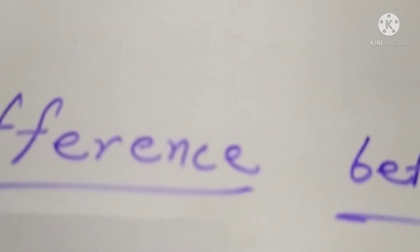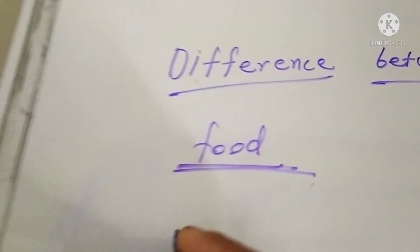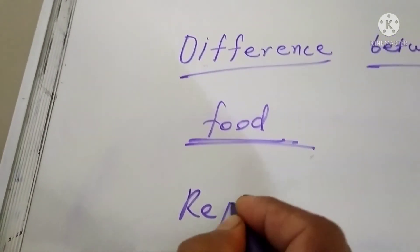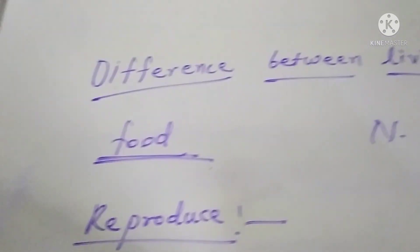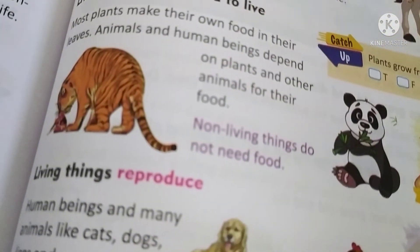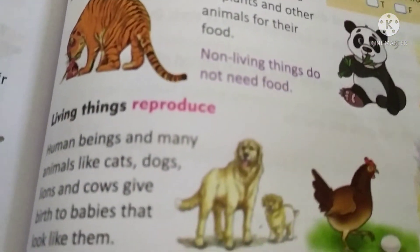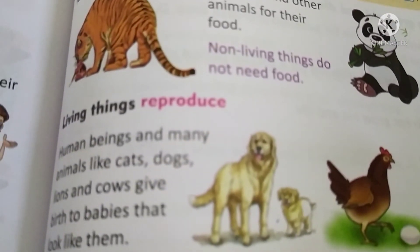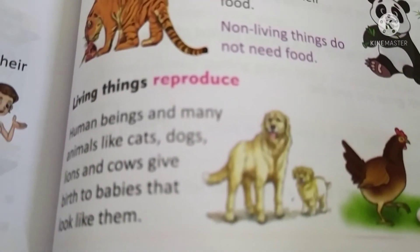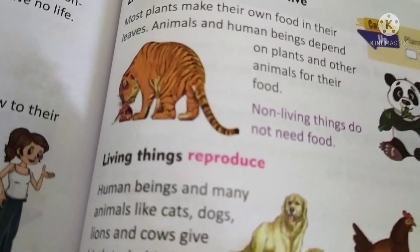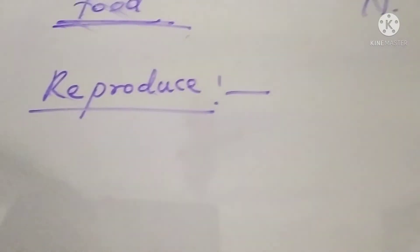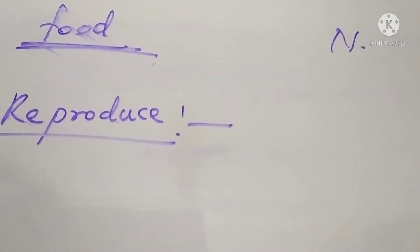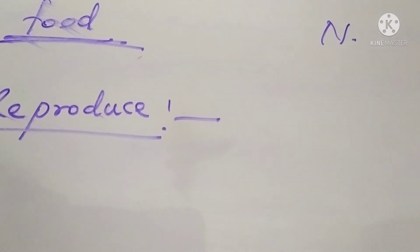Another difference: living things reproduce. Reproduce means — cats, dogs, lions, and human beings give birth to their babies, and those babies are like their parents. But non-living things do not give any type of birth, so they are not reproduced.